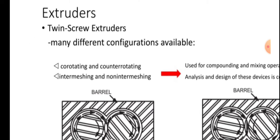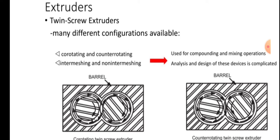Twin screw extruders have many different configurations available: co-rotating and counter-rotating, then intermeshing and non-intermeshing. Co-rotating and counter-rotating are used for compounding and mixing operations. Intermeshing and non-intermeshing are used for analysis and design of these devices, which is complicated.